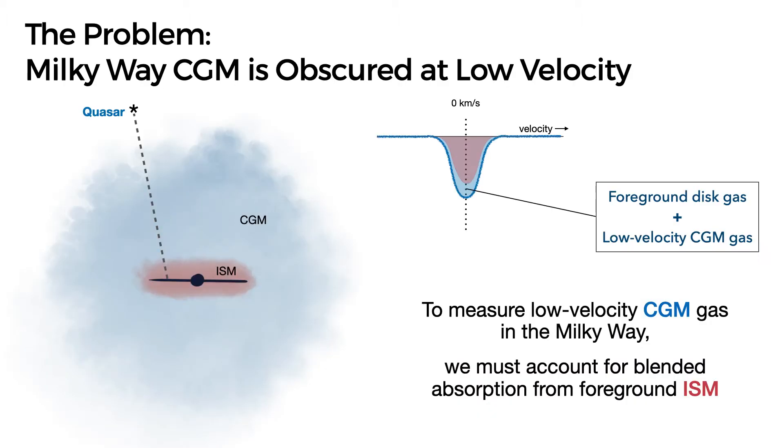One of the challenges that comes with studying the galactic CGM is that low velocity gas is effectively hidden from us because we are embedded within the disk. When we observe the CGM in absorption using quasars as a background source, absorption from low velocity CGM gas is difficult to disentangle from foreground ISM absorption because the two are badly blended.